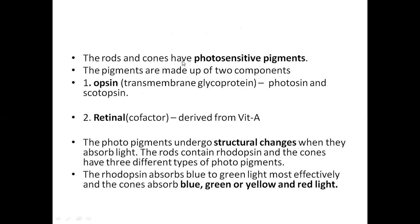The photoreceptor cells — rods and cones — contain photosensitive pigments made up of two important components: opsin, a transmembrane glycoprotein in the form of photopsin in cones or scotopsin in rods, and its cofactor retinal, which is derived from vitamin A. The rods contain rhodopsin, and the cones have three different types of photopigments. On reception of light photons, these pigments undergo structural changes to bring about visual perception.